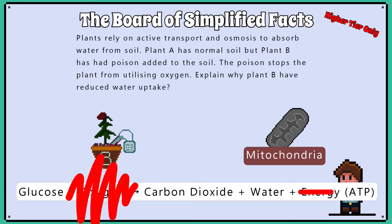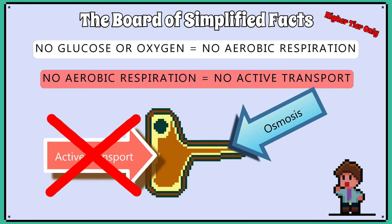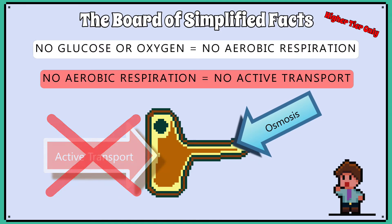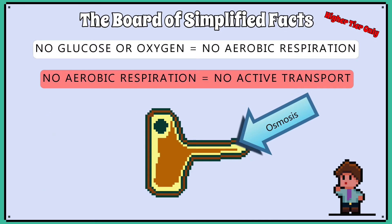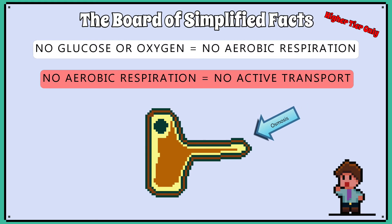This means no energy, ATP, is being released, and active transport requires an input of energy in the form of ATP. This means the root hair cell is unable to absorb mineral ions against the concentration gradient, and the water concentration inside the root hair cell will reach equilibrium with the soil the plant is in. The rate of water uptake is therefore reduced.